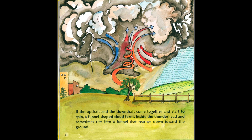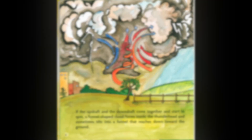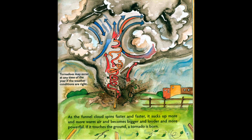If the updraft and the downdraft come together and start to spin, a funnel-shaped cloud forms inside the thunderhead and sometimes tilts into a funnel that reaches down toward the ground. As the funnel cloud spins faster and faster, it sucks up more and more warm air and becomes bigger and louder and more powerful. If it touches the ground, a tornado is born.